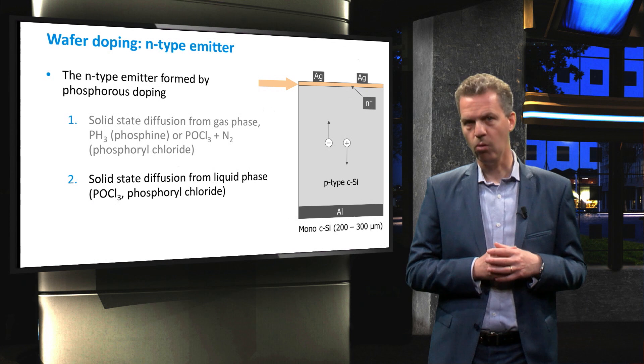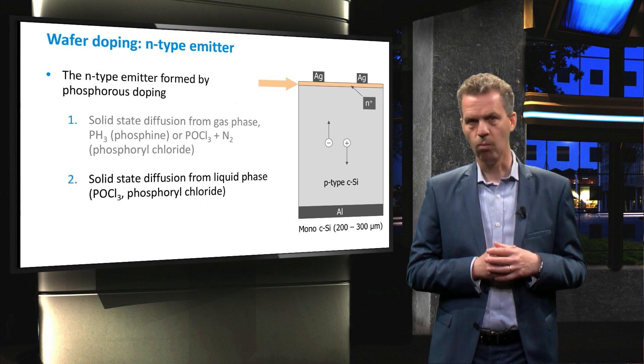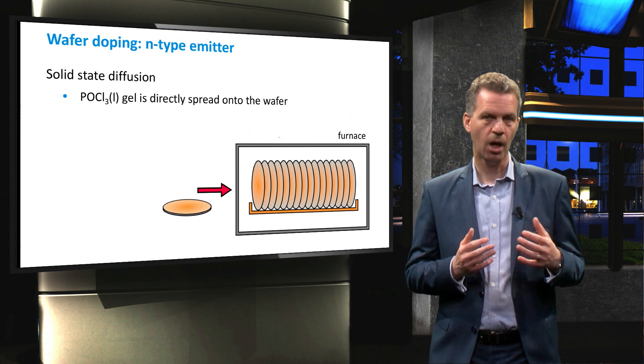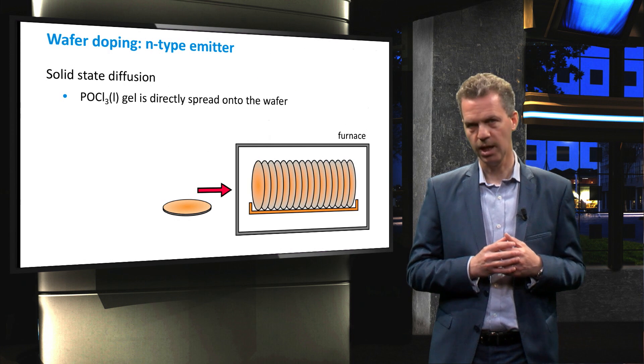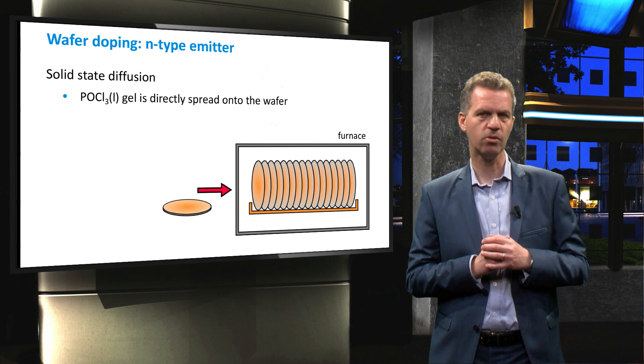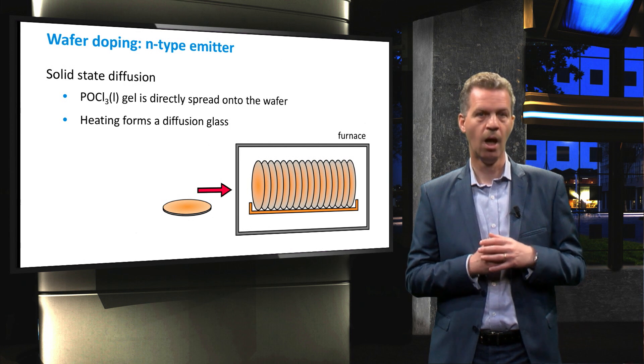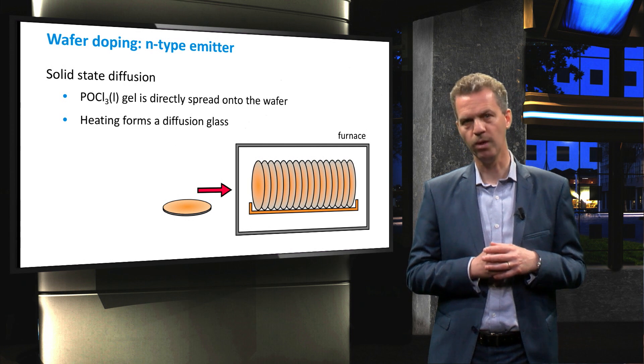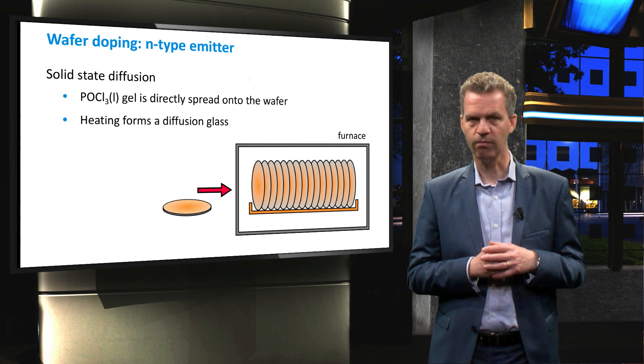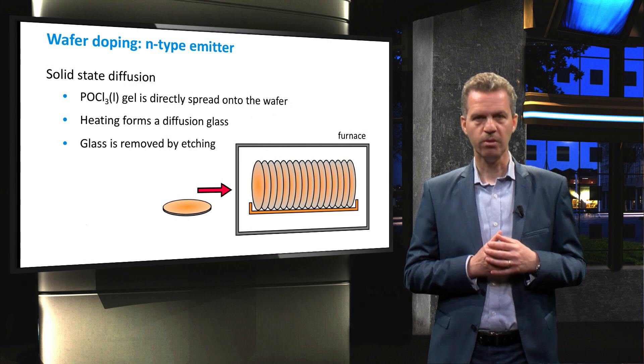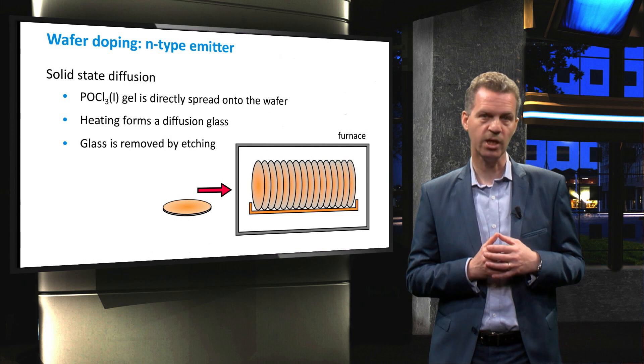POCl3 can also be used in a different way, where the doping atoms are brought into contact with the wafers in a solid phase. A gel containing POCl3 is spread out on each wafer, precisely dosing the doping concentration. Upon heating the wafers in a furnace, a diffusion glass is formed from which the phosphorous atoms can diffuse into the silicon wafer. This glass should be removed subsequently with plasma or wet etching after the diffusion process is finished.